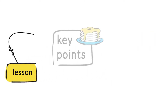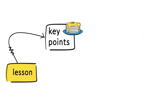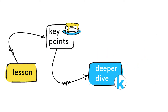Every video starts with a lesson before moving into key points. In the key points section, we'll be looking at an example using a hypothetical pancakes data frame with pancake recipe information. The information covered in the key points section is designed to get you ready for the deeper dive, where we'll be working through code and examples from the Kaggle Intro to Machine Learning course using the Melbourne Housing dataset.